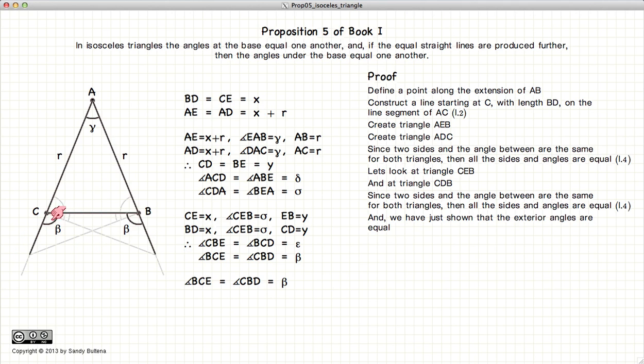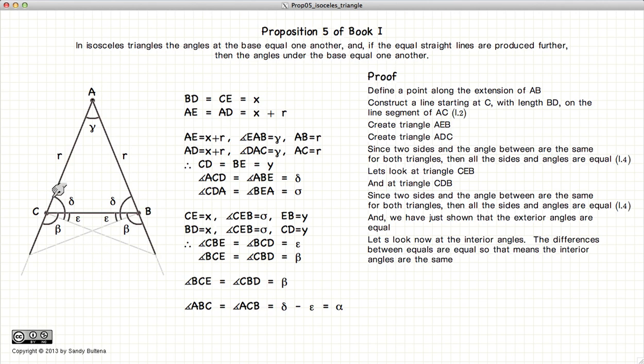So we've just demonstrated that the exterior angles on our isosceles triangle are equal. From before, we have shown that the larger angle of AC, that the larger triangle of ACD was delta. And we've also demonstrated that this angle was delta. We have the little angle is equal to epsilon.